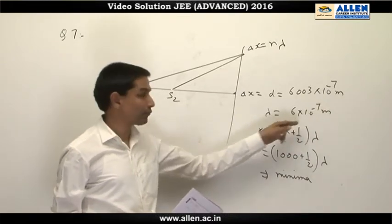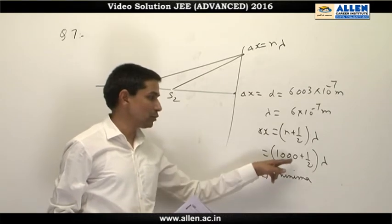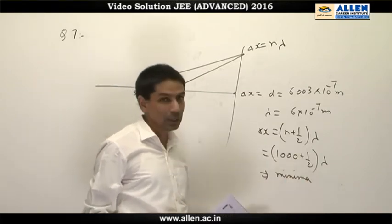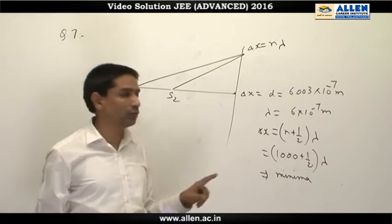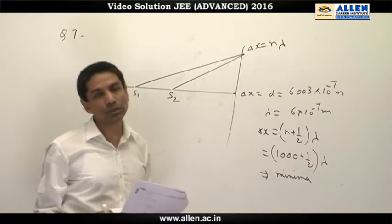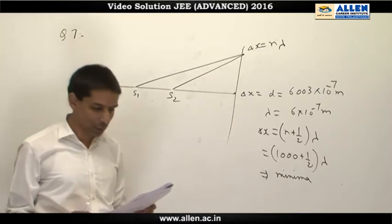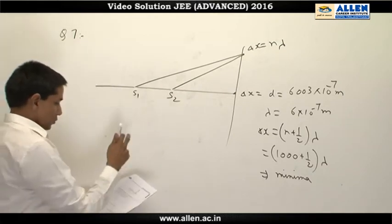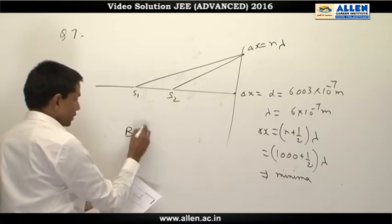Lambda is given to be 6 × 10⁻⁷ meter. From that, delta x comes out to be actually 1000 plus half lambda. Since this is of the form (n plus half) lambda, this point is a minimum. So region very close to point O will be dark. In this case the answer will be B and C.